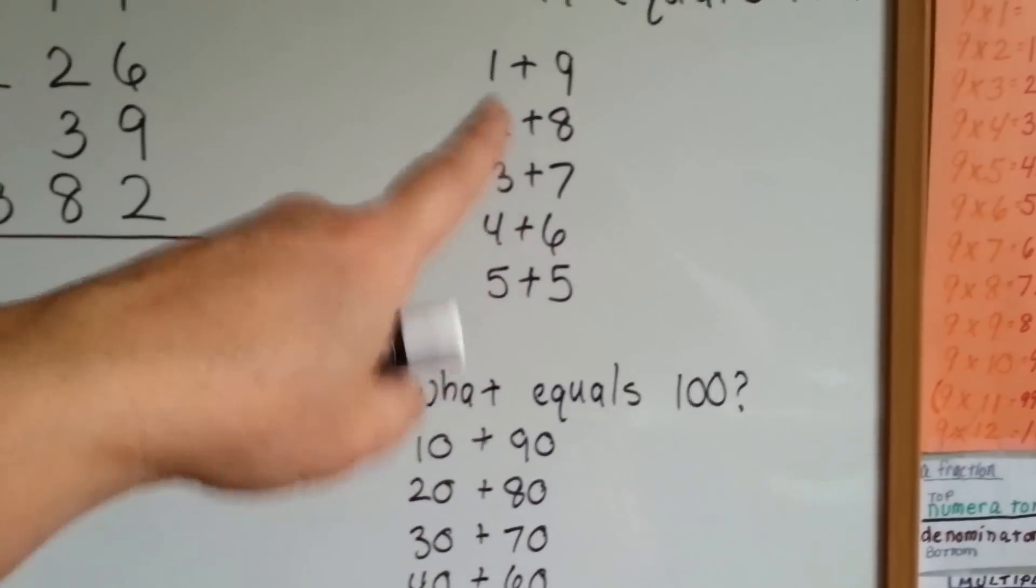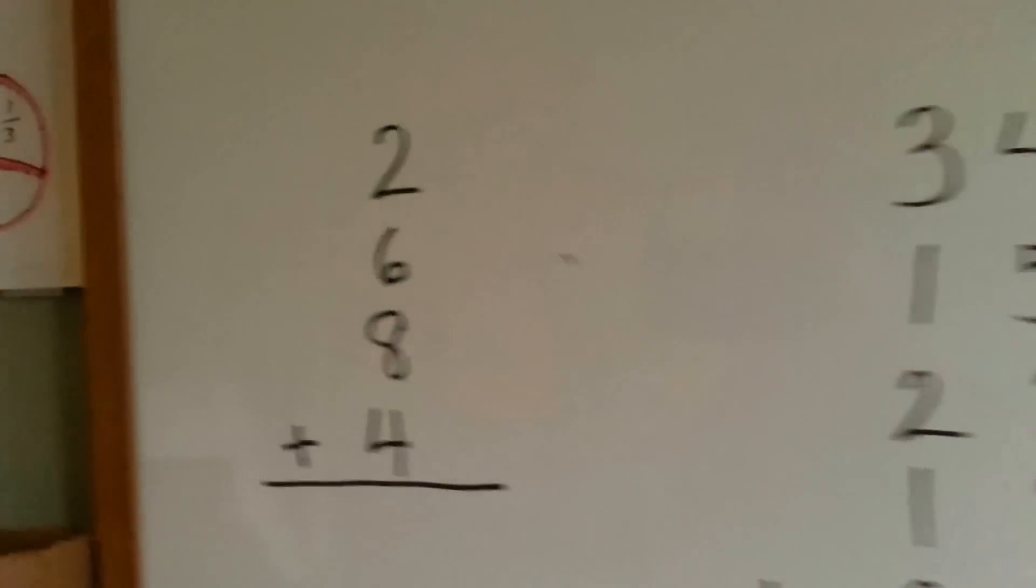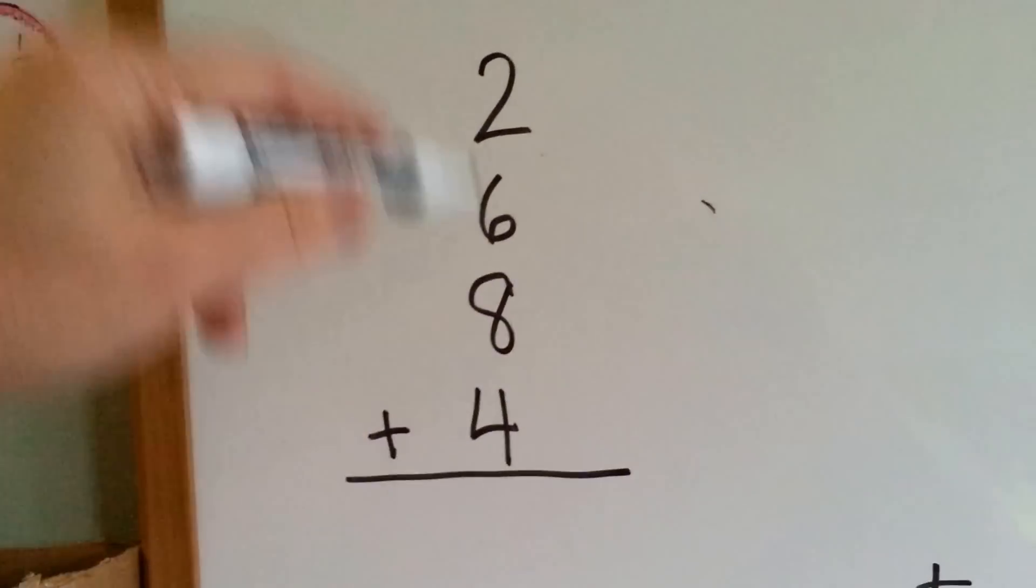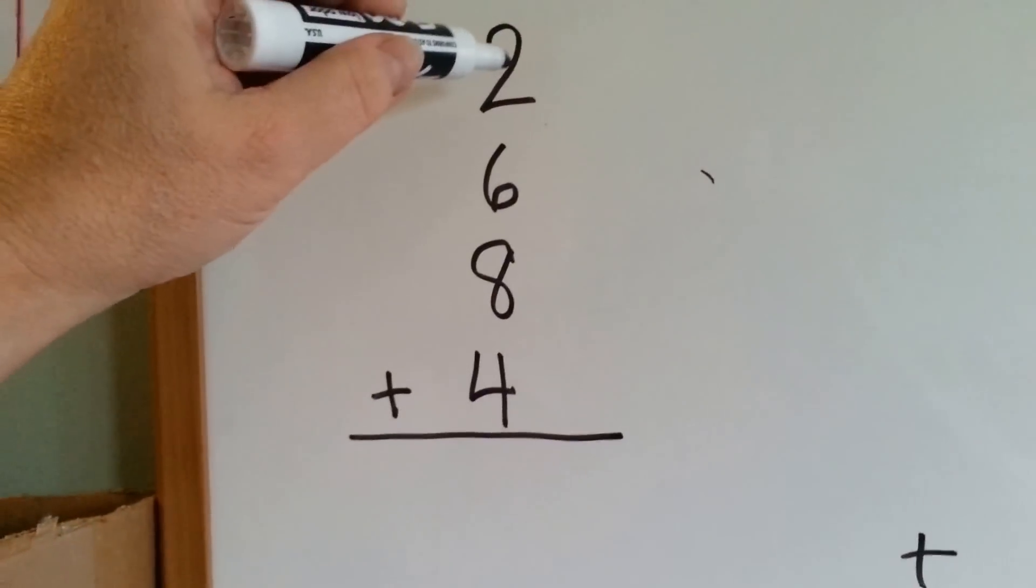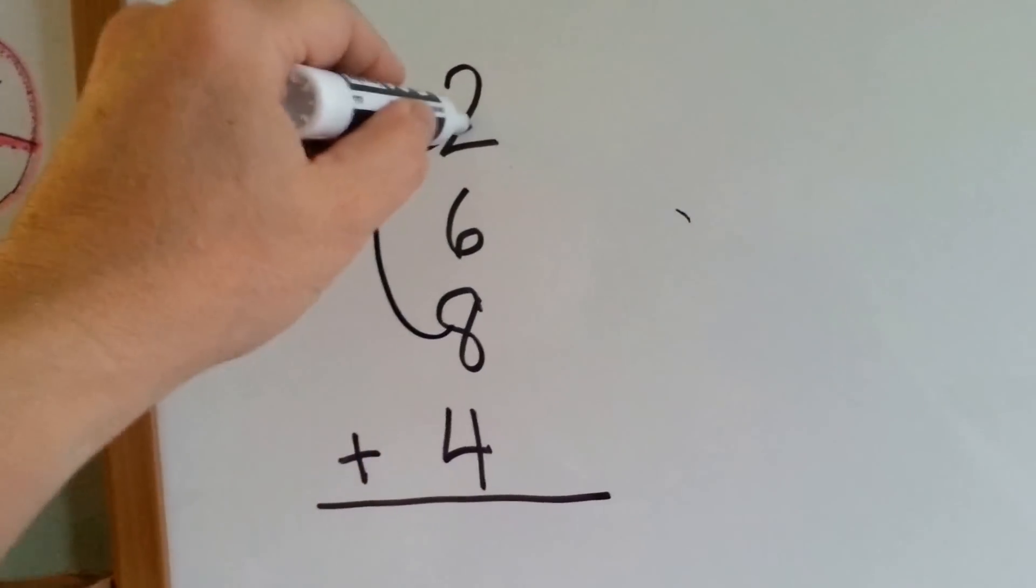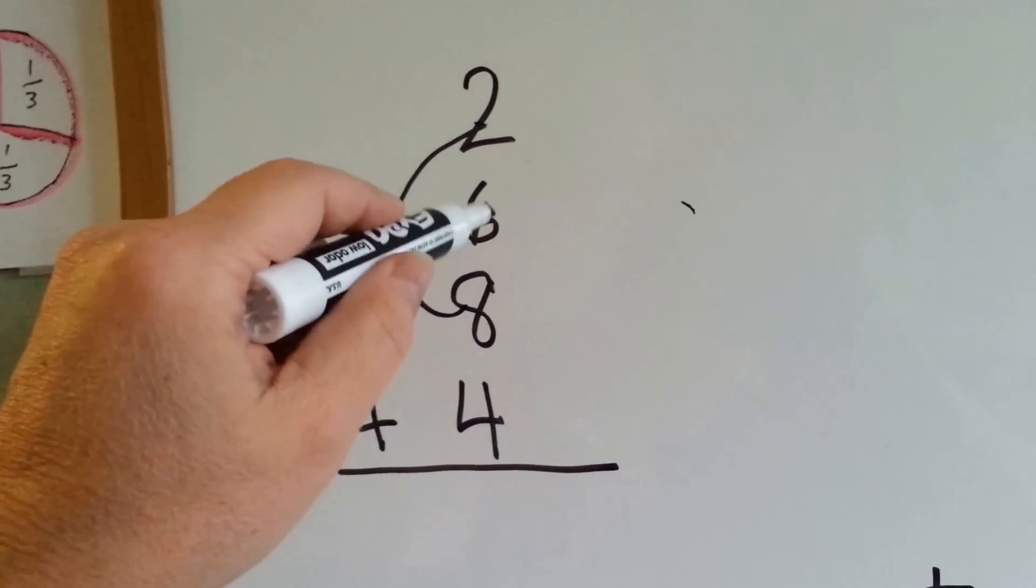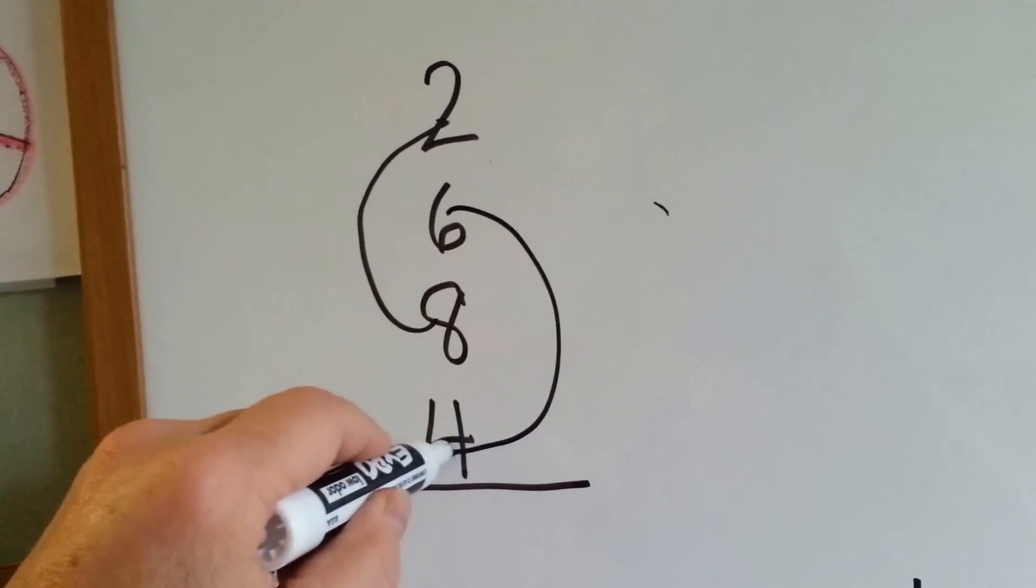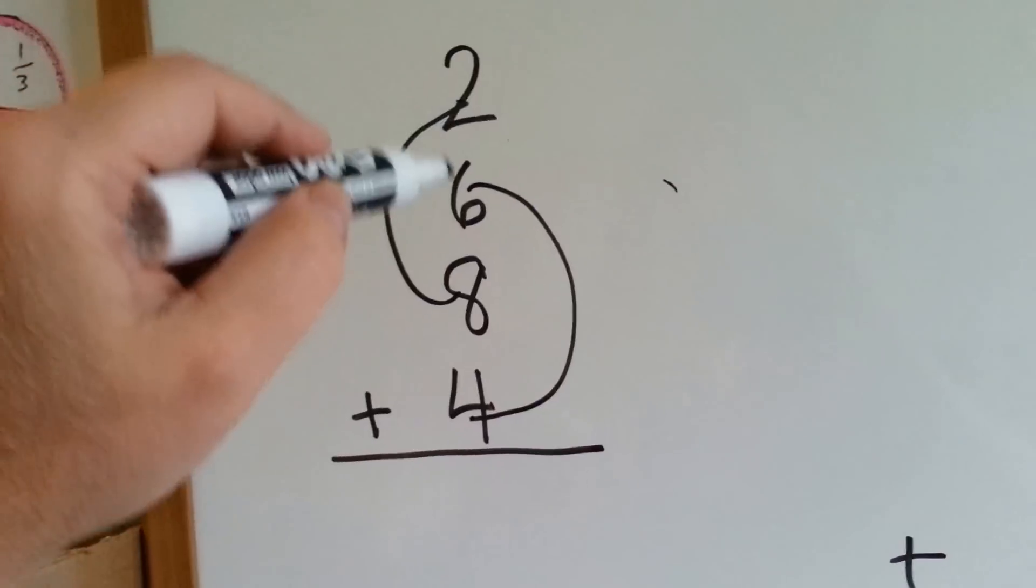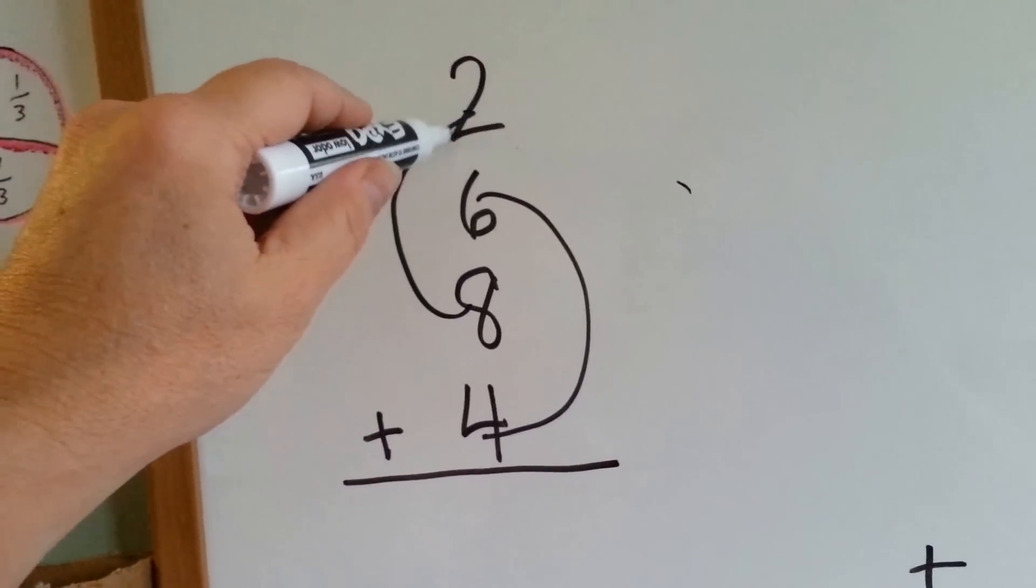So if you know these, it'll make doing compatible numbers very easy. Let's look at this one. If you needed to add these up, instead of adding 2 plus 6, if you know that 2 plus 8 is 10, then you can just do that, and 6 plus 4 is 10. So instead of adding 2, and then adding 6, and then adding 8, and then adding 4, if you can see the compatible numbers,